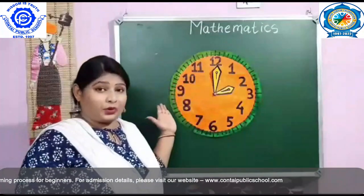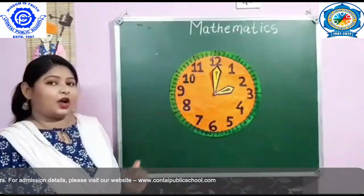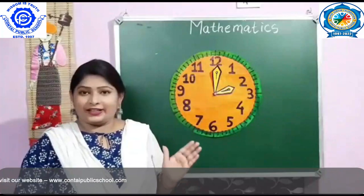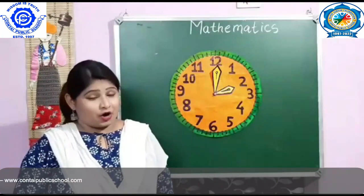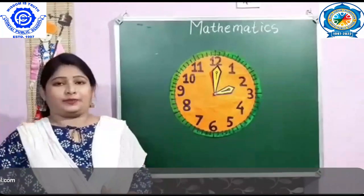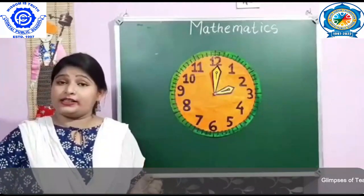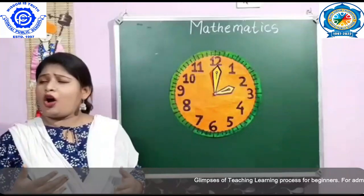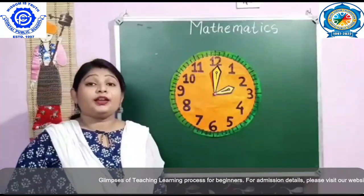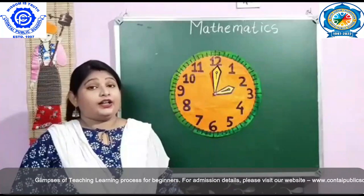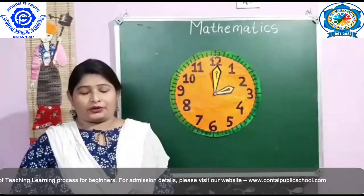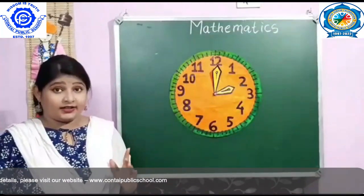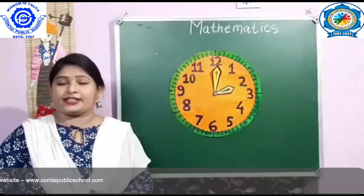Look at the board, children. This is a clock. A clock helps us to read the time. A clock can be found in different shapes — it can be a circle, rectangle, square, oval, or any other shape. There are two kinds of clocks: one is an analog clock, and the other is a digital clock.